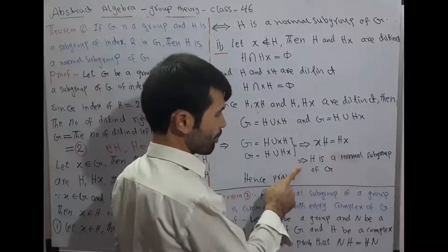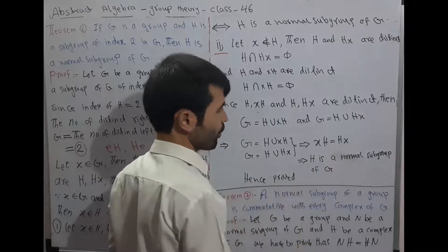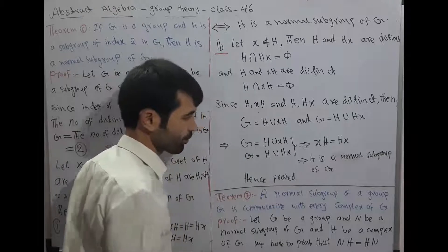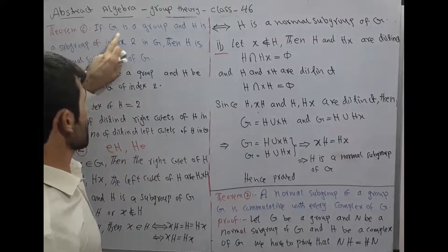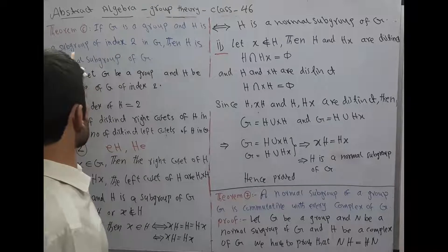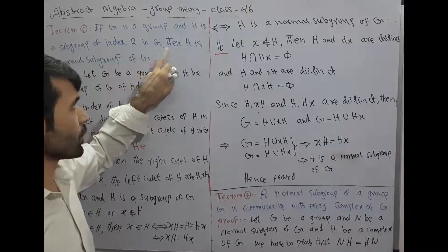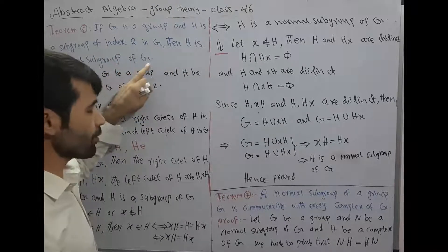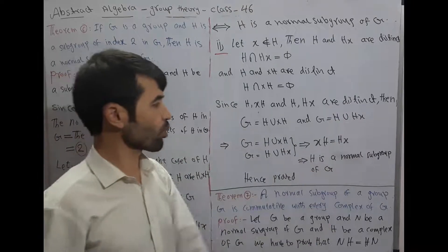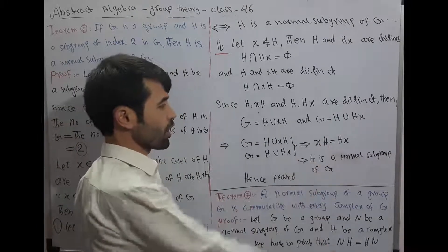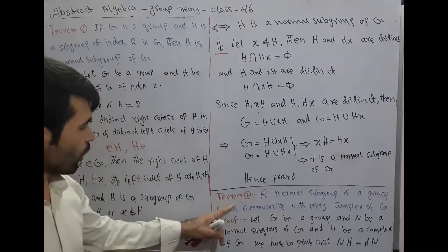This implies H is a normal subgroup of G. Hence the proof of Theorem 6: if G is a group and H is a subgroup of index 2 in G, then H is a normal subgroup of G, since the left cosets and right cosets are equal.